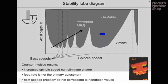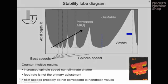This diagram represents some counterintuitive results. The first is that increased spindle speed can be used to eliminate chatter. The second is that feed rate is not the primary adjustment. And finally, these best speeds probably do not correspond to the handbook values.